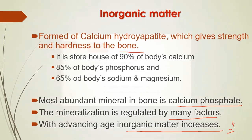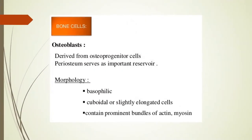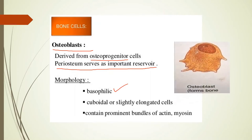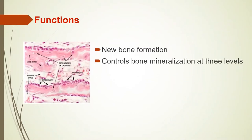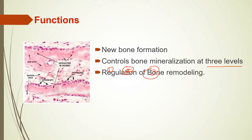Many types of bone-forming cells are present. The first is osteoblasts. These cells are derived from osteoprogenitor cells, and the periosteum serves as an important reservoir. These cells are basophilic in nature, cuboidal or slightly elongated in shape, and contain prominent bundles of actin and myosin. Their function is to form new bone. They also control bone mineralization at three levels: in the initial phase by production of matrix vesicles, at a later stage by controlling ongoing processes of mineralization, and at a third level by regulating the number of ions available. They also help in bone remodeling and mineral metabolism.